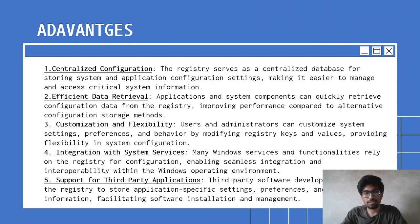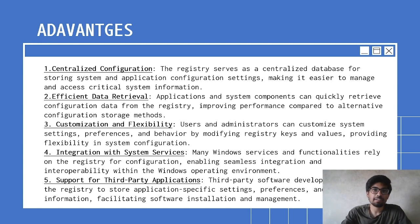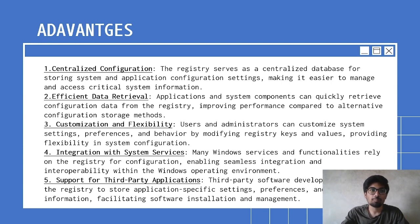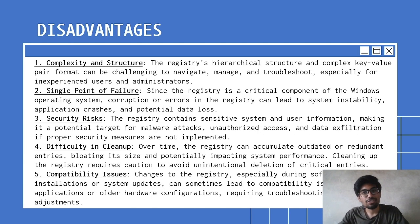Now, the advantages and disadvantages. First advantage: centralized configuration — as mentioned at the start, there used to be INI files for every application, now Windows has created this Windows Registry like a single box where all your files come. Next is efficient data retrieval — we can retrieve data including deleted data. Customization and flexibility — you can set preferences as you want, like hiding the taskbar for a bigger screen. The biggest advantage is that the registry cannot be copied, deleted, or moved — its integrity is maintained, it is admissible in court as solid evidence, and it supports third party applications.